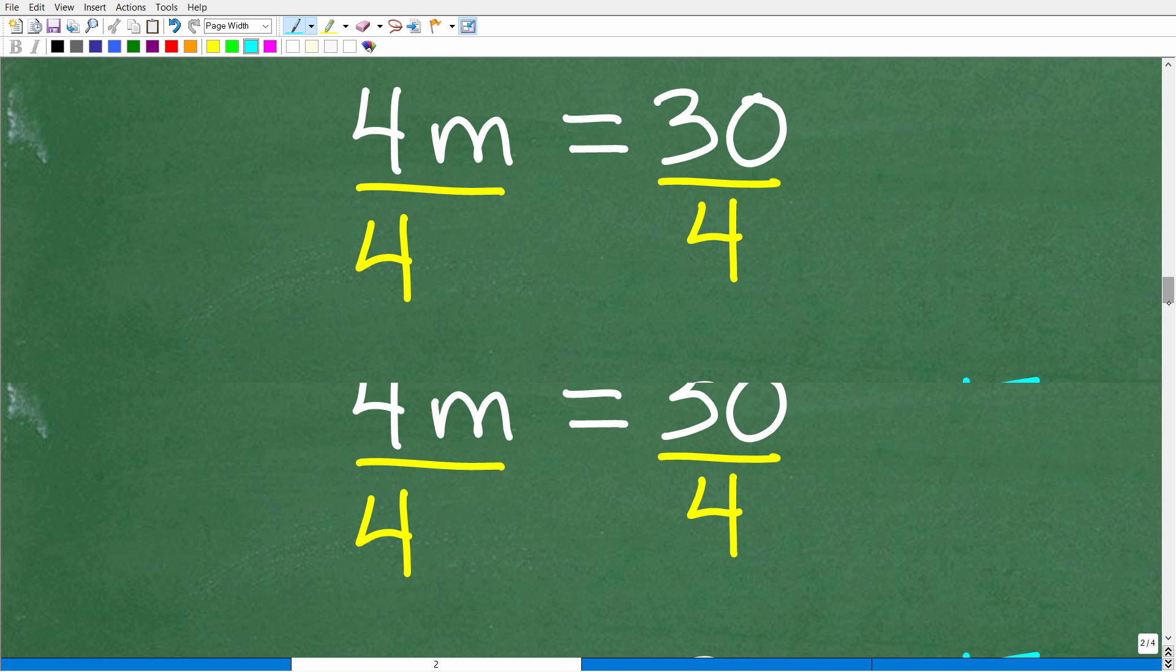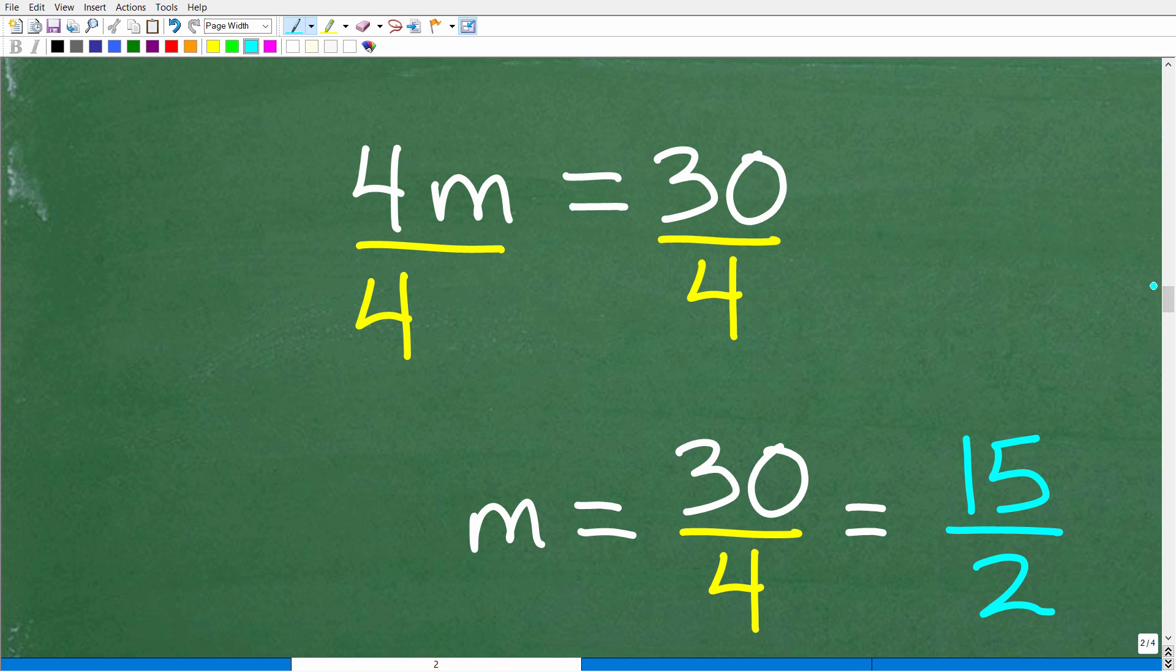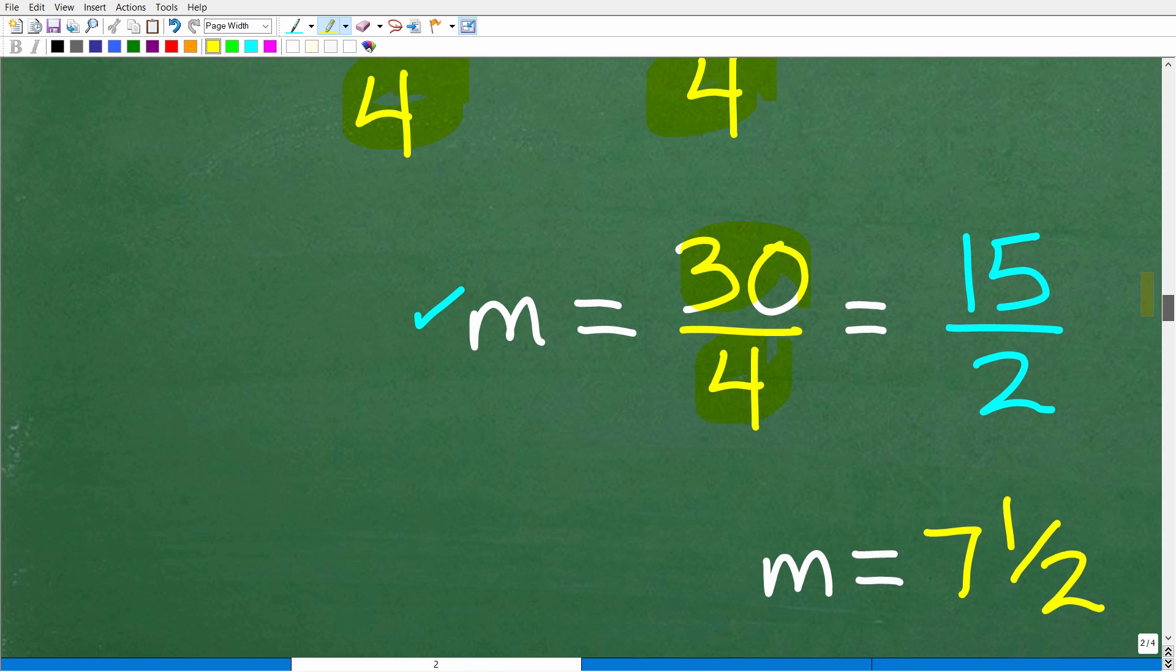So let's get back to the final solution. So four divided by four is one M or M. But again, we're going to divide four by both sides of the equation. Whatever you do to one side, I got to do to the other side. So 30 divided by four. So we got 30 over four.